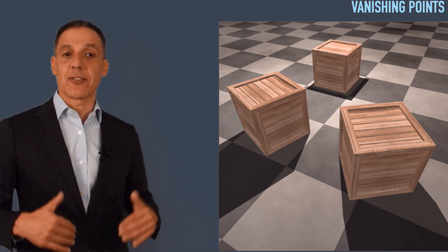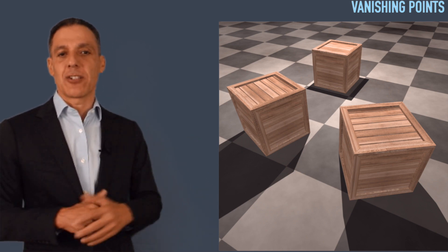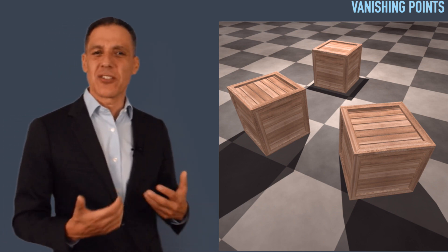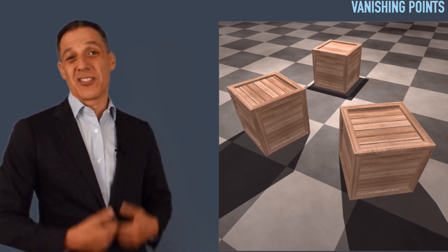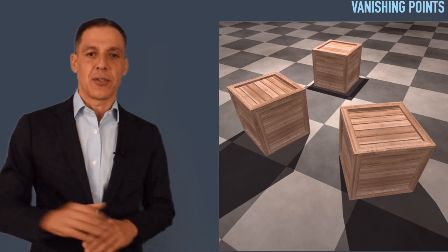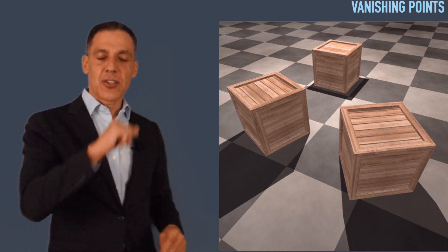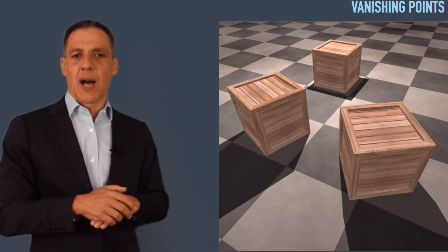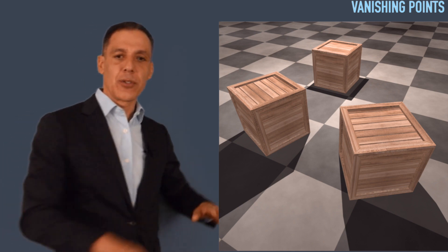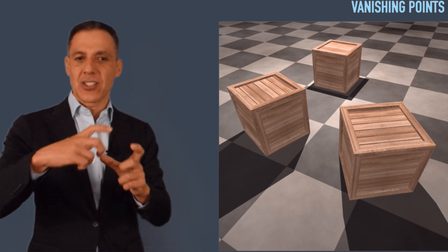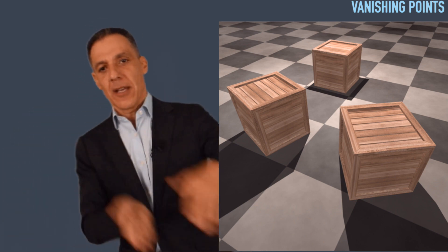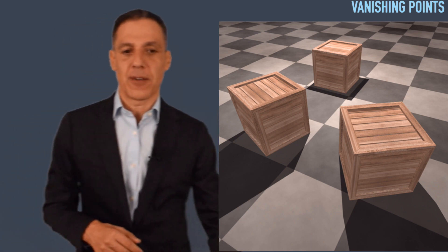Let me start with a couple of insights about vanishing points and vanishing lines. This is a 3D-generated scene — I often use these because they allow me to control things nicely and are physically plausible, so the geometry maps over into the physical world. You can see three boxes, which are actual real cubes with no optical illusion. The floor has a gridded pattern of actual squares, with lines parallel receding in both directions.